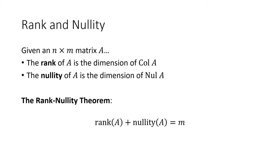A couple more definitions. For an n by m matrix A — n rows and m columns — the rank of A is the dimension of the column space of A, and the nullity of A is the dimension of the null space of A. These are special names for the dimensions of those special subspaces. There's a nice relationship called the rank-nullity theorem: the rank of A plus the nullity of A equals m, the number of columns of A.